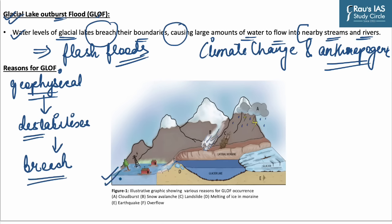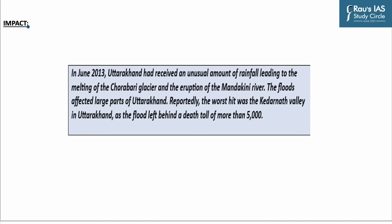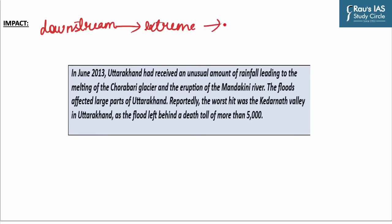Various reasons for glacial lake outbursts include cloudburst, snow avalanches, landslides, melting of ice in moraines, earthquake, and overflow. When a glacial lake bursts, water flows into downstream areas at extreme speed, causing massive damage to infrastructure. The glacial lake outburst remains a persistent threat to downstream communities, infrastructure, and flora and fauna.